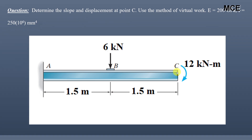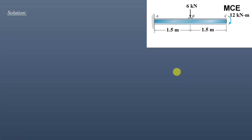The method of virtual work requires that where you have to find the slope or displacement, you apply the virtual load there. For slope, you apply a virtual moment of magnitude 1. For displacement, you apply a concentrated load of magnitude 1 kN or 1 N, according to the units of your load on the beam.